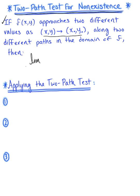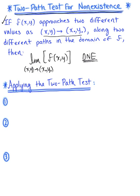We say that the limit as point P, or (x, y), approaches P-naught, or (x-naught, y-naught), of our function f(x, y) does not exist. Now I want you to be careful here. You should always exhaust all simplification methods for evaluating a limit before assuming that your limit does not exist. But in the case where that function is approaching different values as P approaches P-naught along different paths in the domain of f, in that case the limit does not exist.